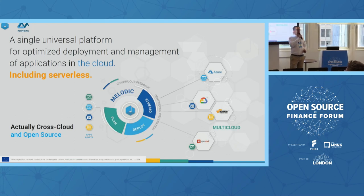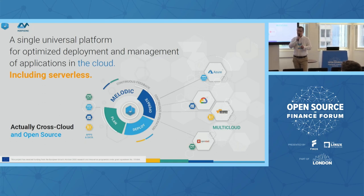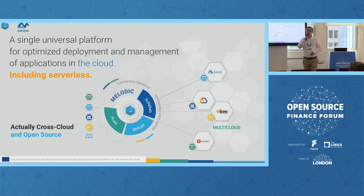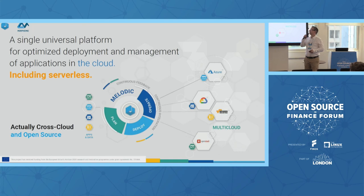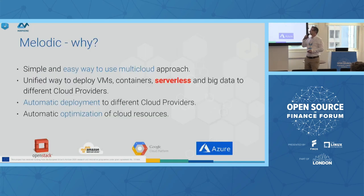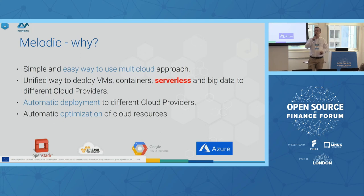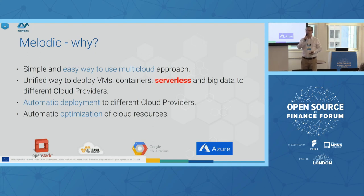I will start with a few slides to give you a theoretical background for the system, and then Alaa will present it live. The Melodic Multi-Cloud Optimization Platform is fully open source, built by several partners. The aim of Melodic is to optimize deployment. It's probably the simplest way to deploy applications to multi-cloud — supporting virtual machines, containers, serverless, and big data frameworks. Deployment is fully automatic and optimized. Melodic fetches offers from different cloud providers and automatically optimizes the deployment.